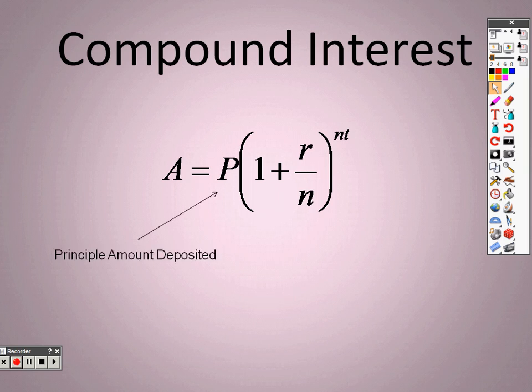The r stands for rate, but this is very crucial. The rate needs to be written as a decimal. You're going to see rate as a percent. You're going to need to move the decimal point two spots over to get it to be written as an actual decimal.